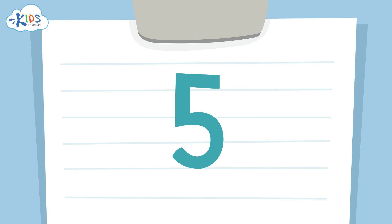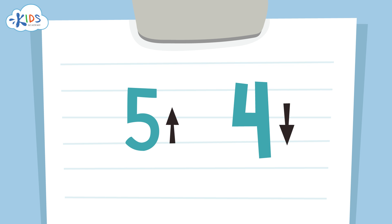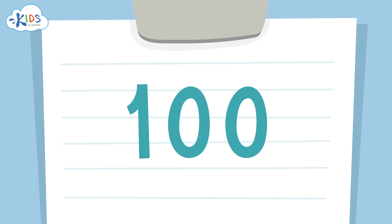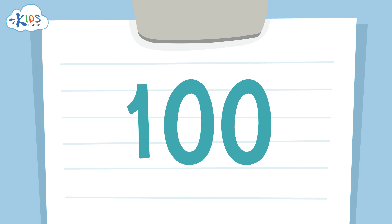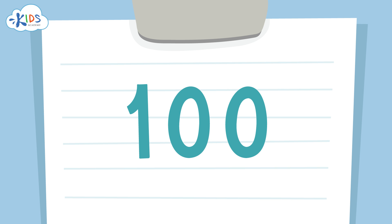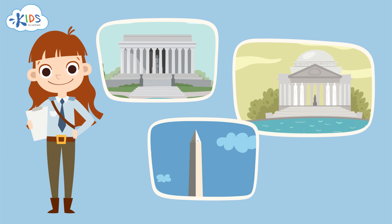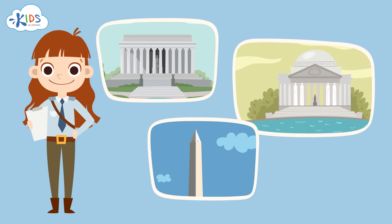The same rule applies when rounding to the hundreds place as it does for rounding to the tens. Five is the key number: if it's five or higher you round up, but if it's four or lower you have to round down. You round the number in the hundreds place and make the numbers in the ones and tens places zeros.